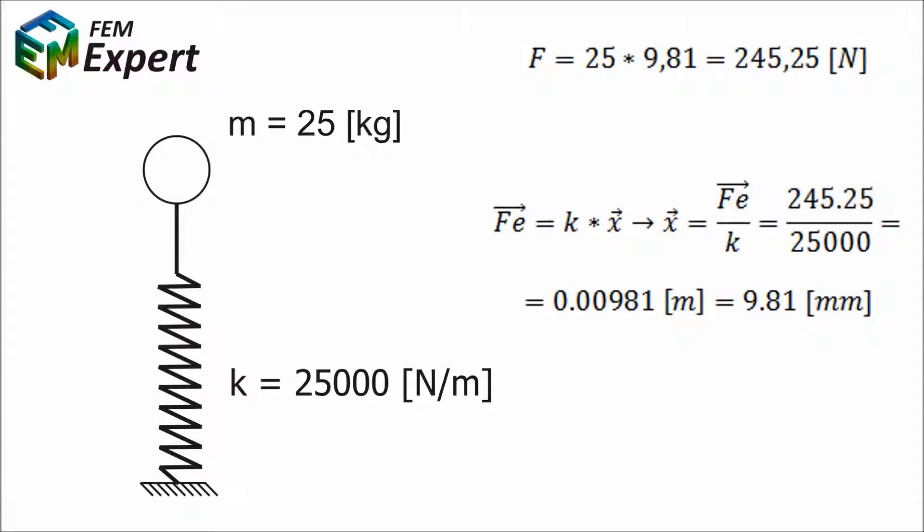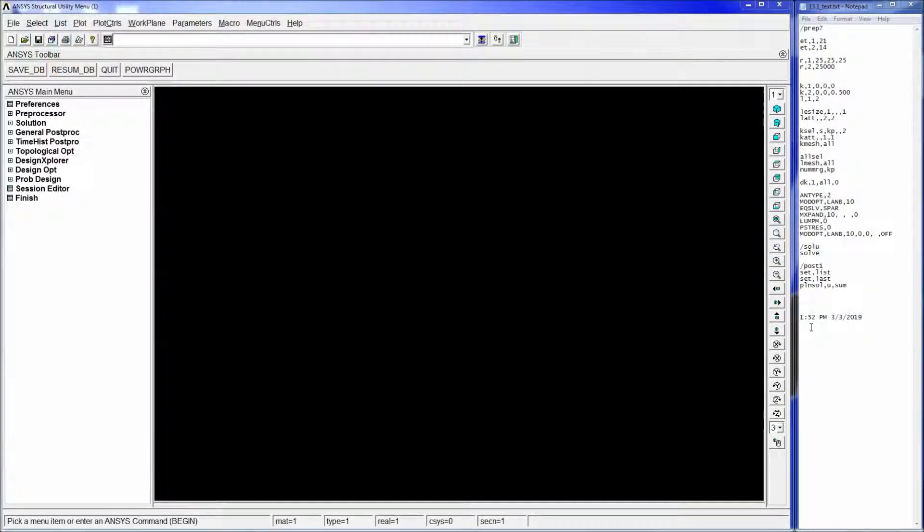For today's model, as used in the previous tutorial, we're going to use a model of a suspended mass of 25 kilograms over a spring having 225,000 newton meters of stiffness.